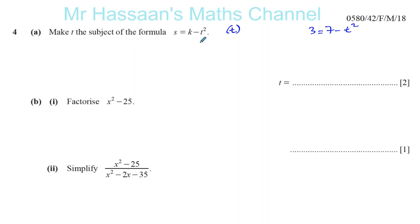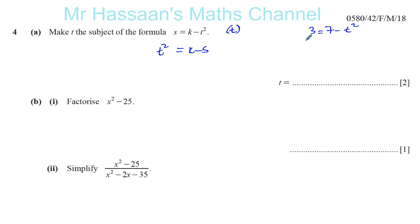Everything else goes on the other side. I personally like to make the term that I'm making the subject of the formula into a positive term. So what I would do is add T squared to both sides so it ends up being positive on this side. In which case, I have to subtract from both sides because I want this side for the T's. So I added T squared to both sides and subtracted from both sides - that's exactly what I would do here. I want the T's to be on the side where they're positive, so I'll add T squared to both sides and subtract 7 from both sides.